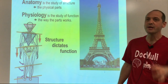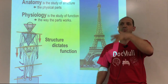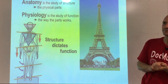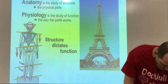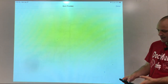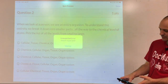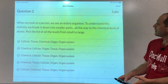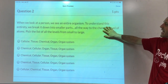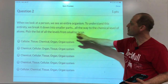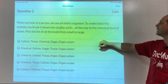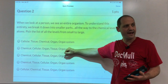To understand a person as an entire organism, we break it down into smaller parts, all the way to the chemical level of atoms — we'll talk about atoms on Wednesday. Can you pick the list of all the levels from small to large? The smallest level is atoms.